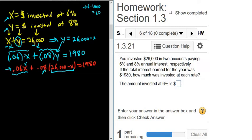So .06x plus, and then we multiply .08 times 26,000. Let me put that in my calculator. So we get .08 times 26,000. That's equal to $2,080. So $2,080 minus, and then distributing this, we get minus .08x, and that's equal to 1,980.